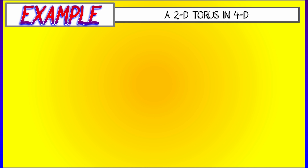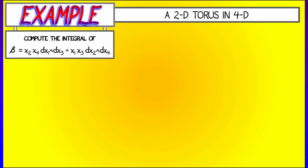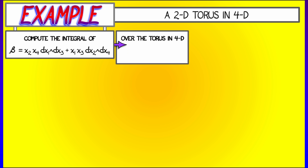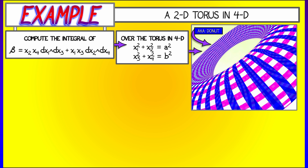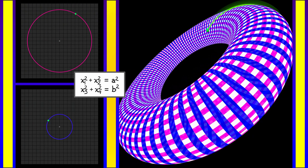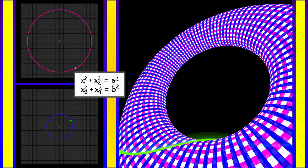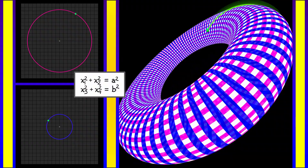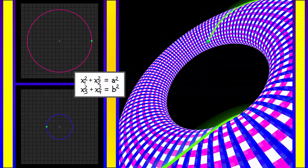Let's look at another example, this time integrating a two-form field in 4D. Consider beta given by x2·x4 dx1 wedge dx3, plus x1·x3 dx2 wedge dx4. We're going to integrate this two-form over something two-dimensional — a torus, given by x1² + x2² = a² and x3² + x4² = b². Those two equations correspond to two circles, one in the x1,x2 plane and one in the x3,x4 plane, with radii A and B respectively, and together they give a torus in 4D.